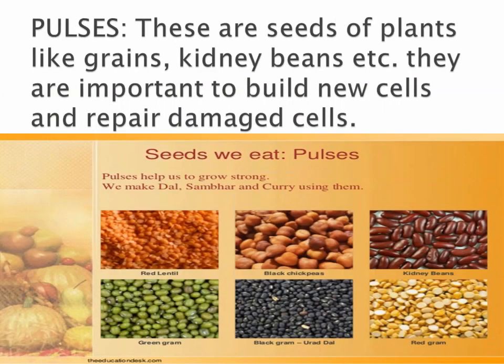Let us now learn about pulses. Pulses are seeds of plants like grains, kidney beans etc. They are important to build new cells and repair damaged cells. Pulses help us to grow strong. We make dal, sambhar and curry using them. How do we make yummy rajma chawal? We make it from kidney beans, which are pulses.